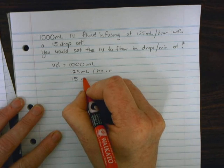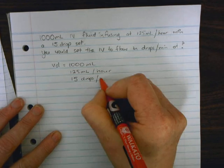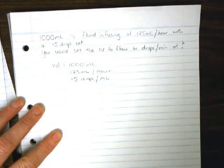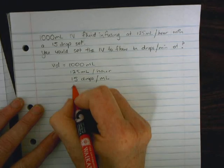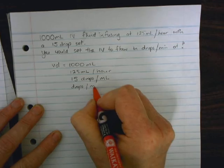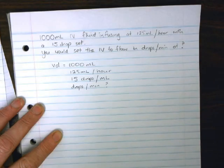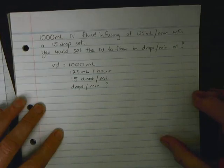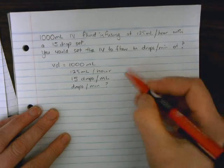And we know we've got a 15 drop set, so 15 drops per 1 mL. So what is the drop rate? The drop rate is in drops per minute - that's what we're trying to find.